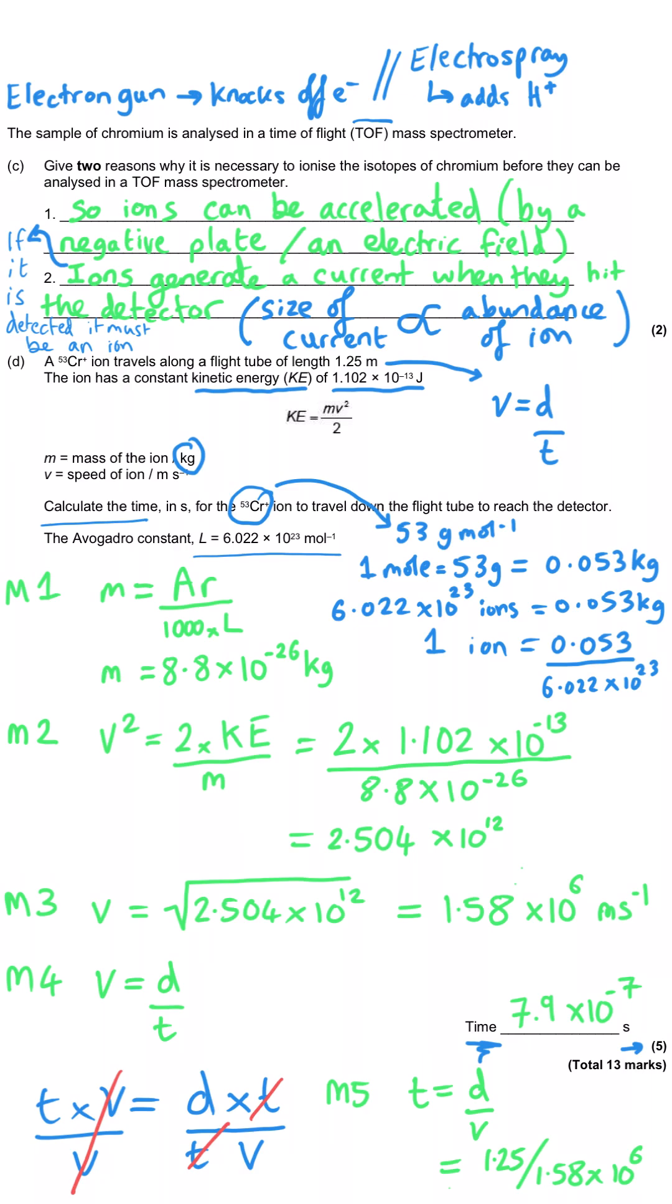And just to say something about method marks, if you had made a mistake at any earlier stage - let's say you forgot to convert the mass into kilograms or something - if you did everything else correctly, you would get all of the method marks. For instance, the stage three, that's for square rooting whatever answer you got at the previous stage for v squared. And similarly, doing your distance divided by speed calculation - if you'd got the incorrect value for speed here in m3, but you'd then use that incorrect value correctly in m5, you wouldn't be penalized a second time. You'd get error carried forward or transferred error.